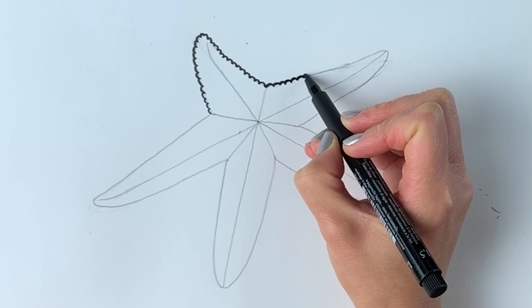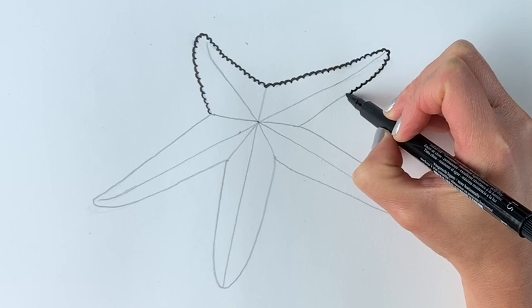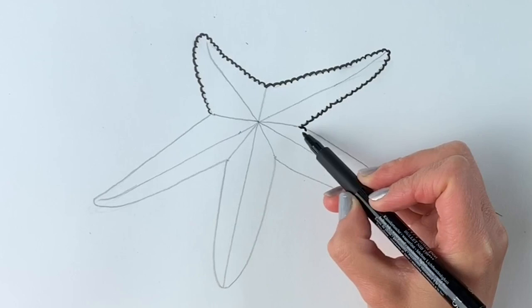And remember that the little arms go upwards just here, and then just carry on with the bumps just around the outline. So carry on like this.